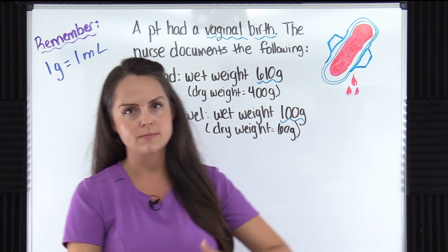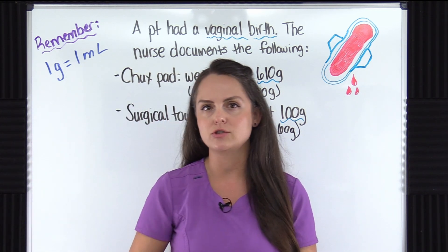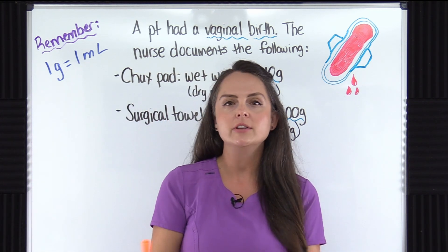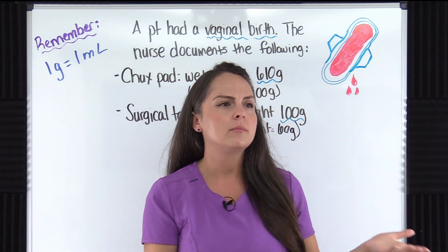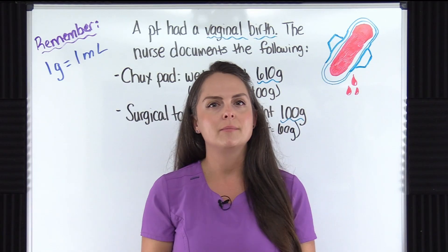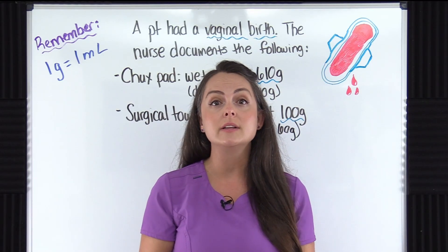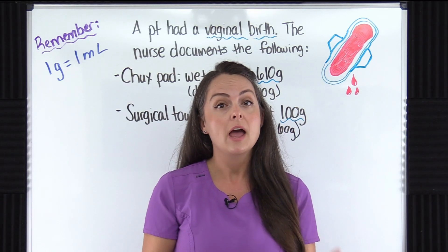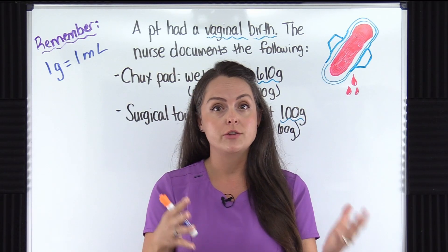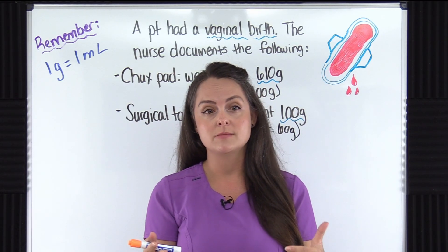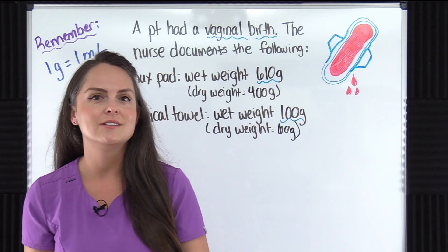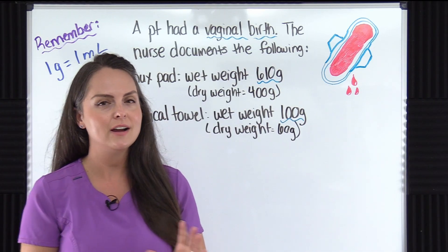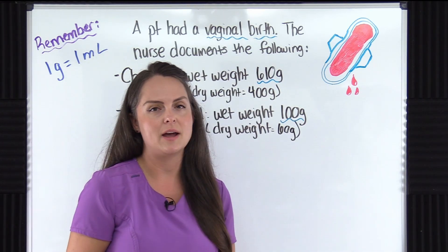For instance, they have a chux pad, a peri pad, a surgical towel. We look at it and say there's a moderate amount of blood here and there, but that can be really subjective based on the nurse. This nurse may think it's a lot while another nurse doesn't. But here we have a number.